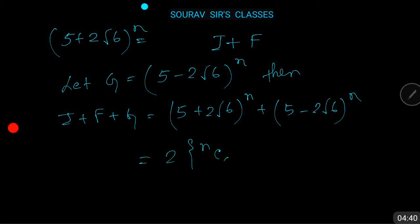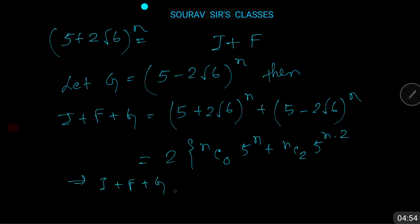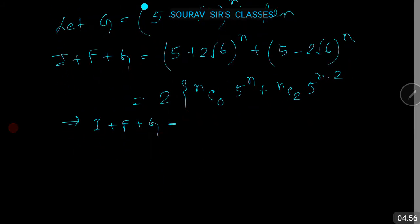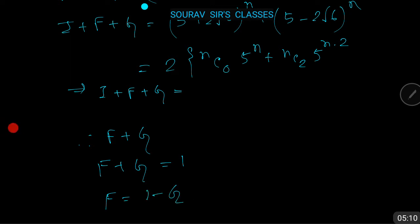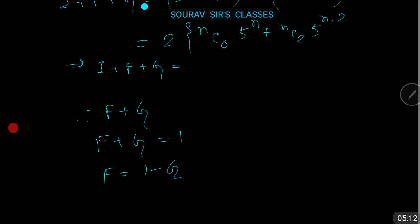So I + F + g equals 2[nC0 · 5^n + nC2 · 5^(n-2) · (2√6)² + dot dot dot], which is an even integer. Therefore F + g is an integer. Since 0 < F < 1 and 0 < g < 1, we have F + g = 1, so F = 1 - g.